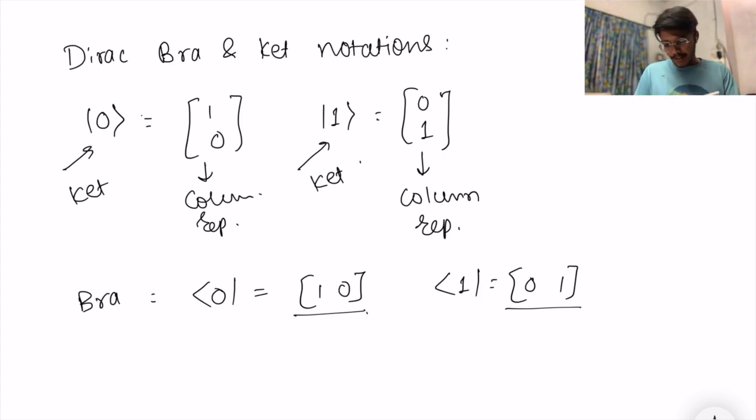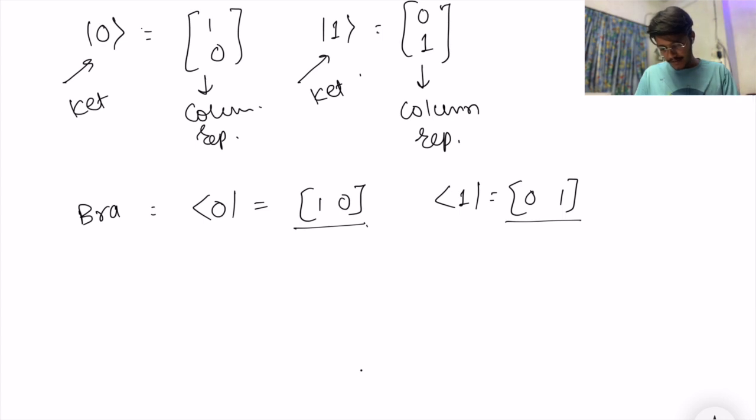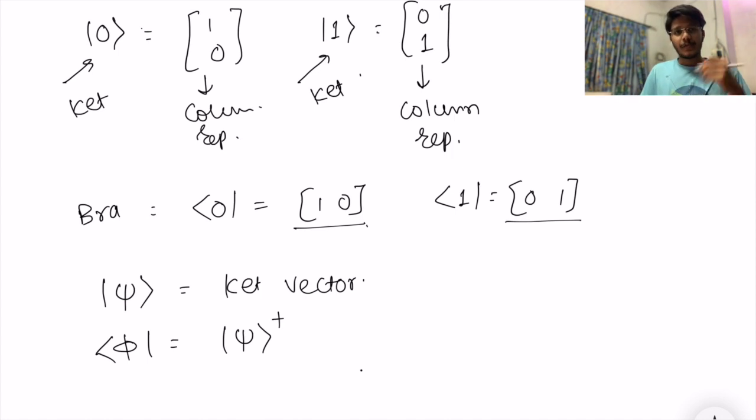Now these bra and ket are conjugate transpose of each other. What I mean by conjugate transpose is if you represent a vector like this as a ket vector, then your bra vector is simply a conjugate transpose of this.